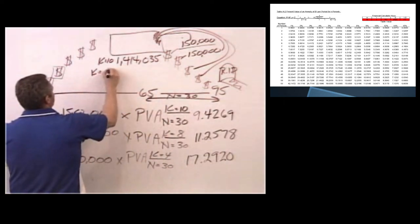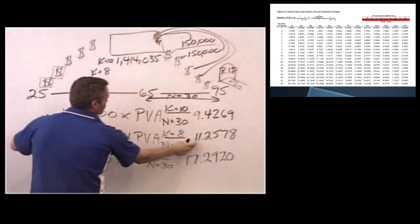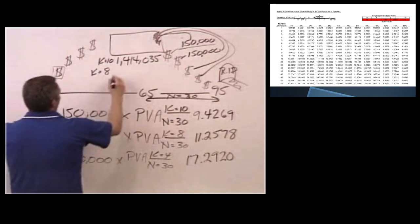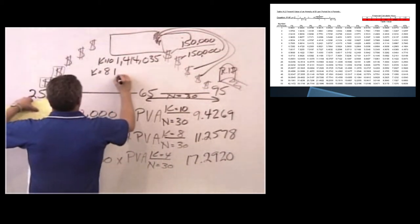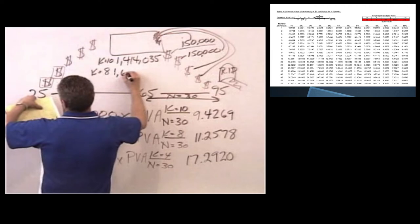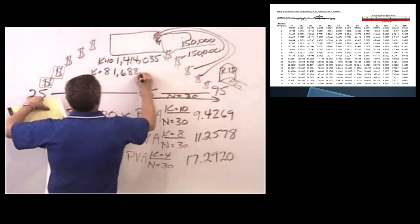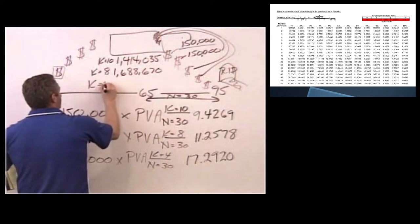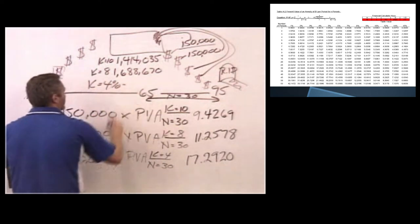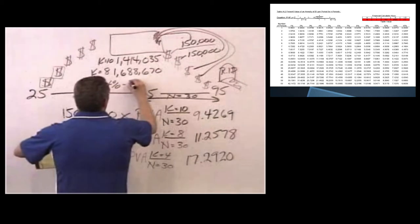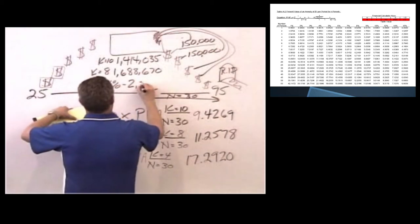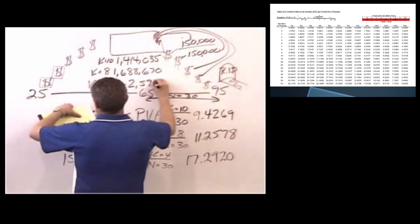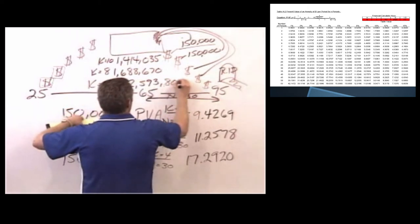If K equals 8, so we're multiplying this one down here, I have to save more money. I have to save about 1.6 million: $1,688,670. And if I have a rate of return that's only 4%, not that much, I actually have to save $2,593,800.